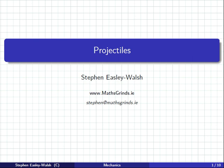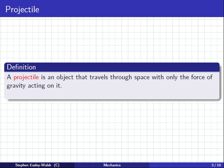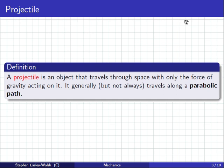Do you know the name of the shape of this curve? Trajectory? Yeah, that's not quite the name of the shape, that's just what it is, it's a trajectory. So it has a particular shape. Parabola. Correct. Yeah, parabolic. A projectile is an object that travels through space with only the force of gravity acting on it. It generally, but not always, travels along a parabolic path.